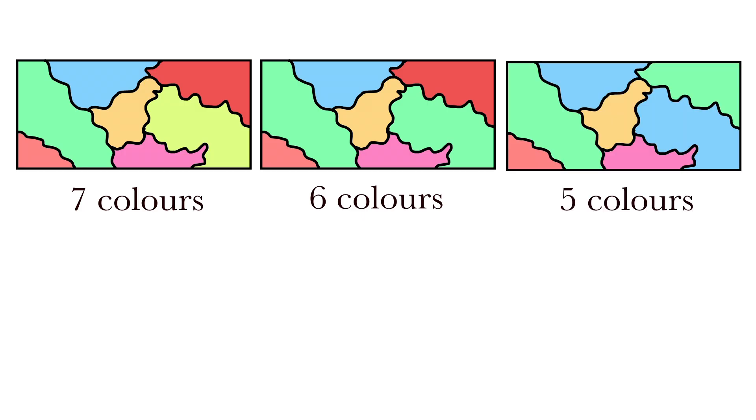So you set off, trying 7, 6, and 5 colors, which all seem to work. After a little bit of effort, you finally find a way to color the map with 4 colors.